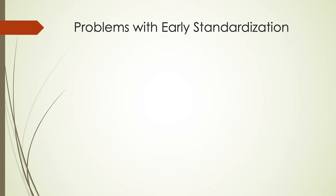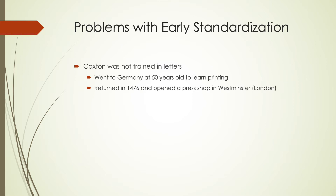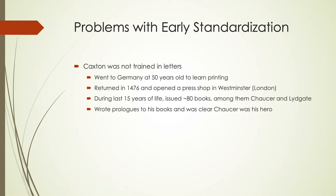Some of the problems with early standardization were largely because the people in charge of starting this process weren't very good at knowing what to do for standardization. Caxton himself was not trained in letters. He went to Germany when he was around 50 to learn printing, then brought it back in 1476, opened up a press shop in Westminster in the London area, and spent the rest of his life creating and issuing books, among them authors including Chaucer and Lydgate. He wrote prologues to some of his books, and it was very clear through his writing that Chaucer was his hero.